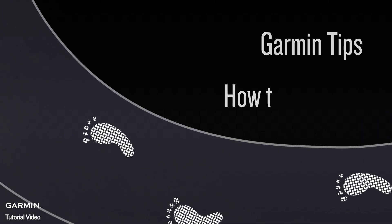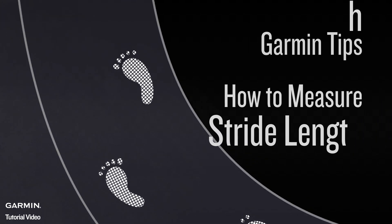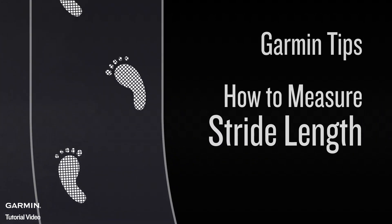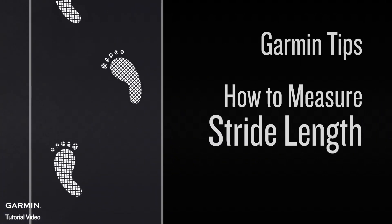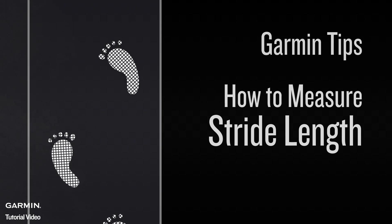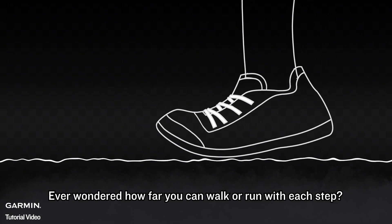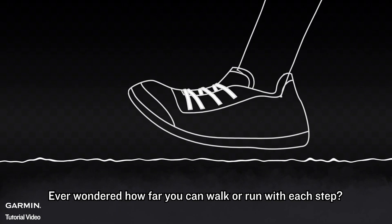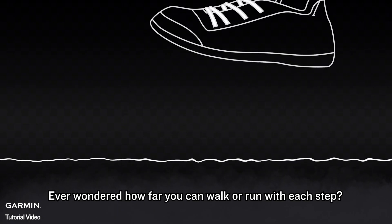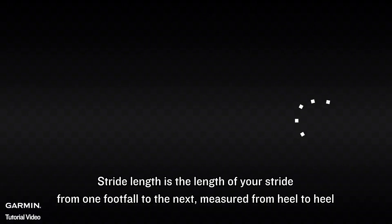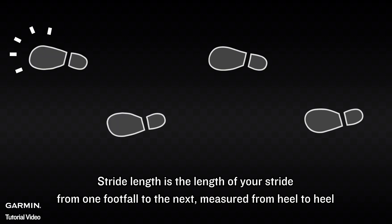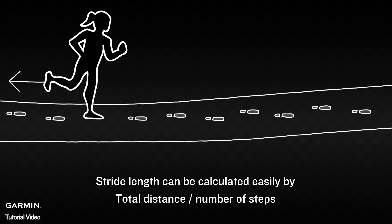Garmin tips: how to measure stride length. Have you ever wondered how far you can walk or run with each step? Stride length is the length of your stride from one footfall to the next — measure it from heel to heel.